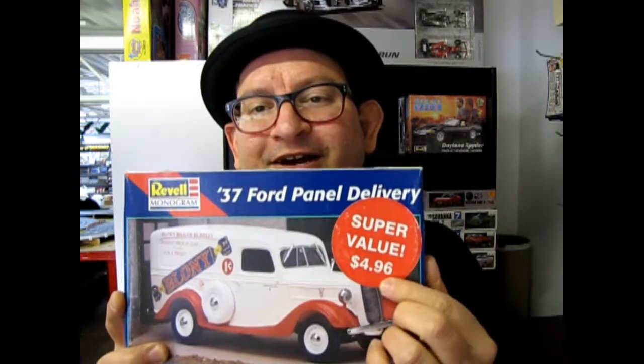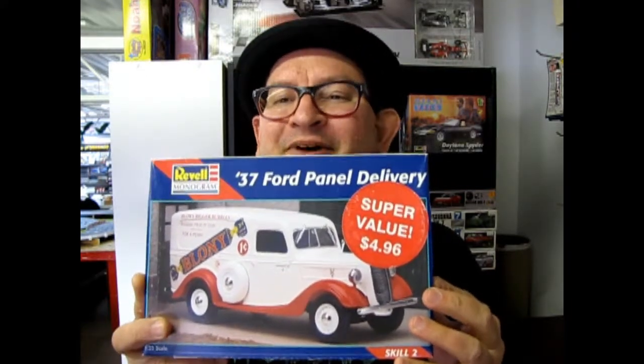And this is Revell Monogram's 1937 Ford panel delivery van. It was a super value at $4.96 but I'm not selling it for that anymore. No sirreebub. And I'm not actually selling it. But we can look inside it and that's what we're going to do next on What's in the Box. So let's go down to our table and check it out.